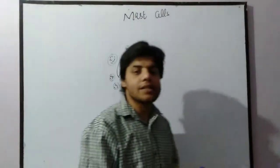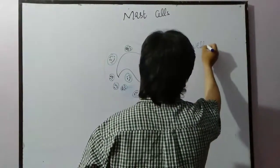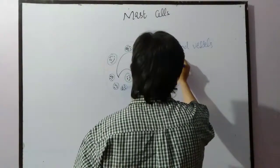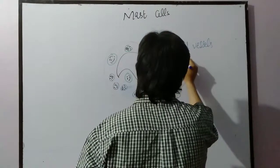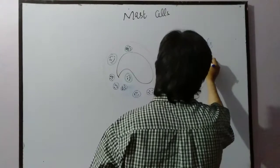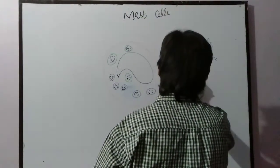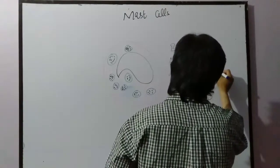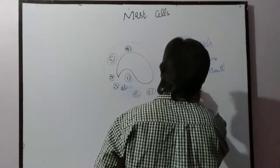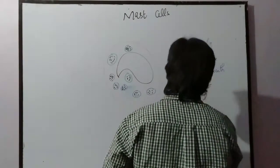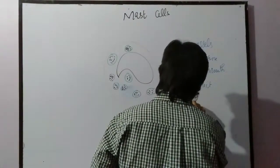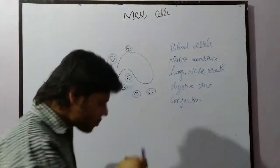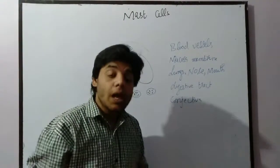Mast cells are usually present in different tissues. They are usually present in the blood vessels, and in the mucosa membrane — specifically the mucosa membrane of the lungs, nose, mouth, digestive tract, and also the conjunctiva.